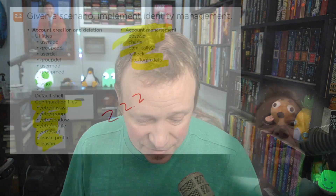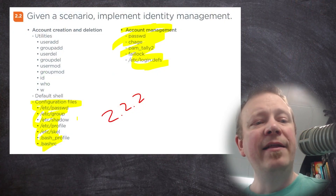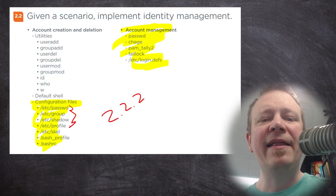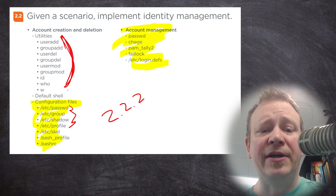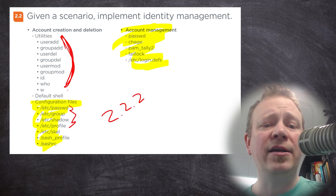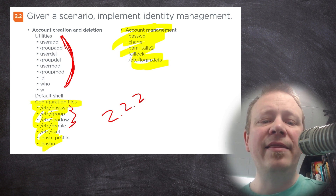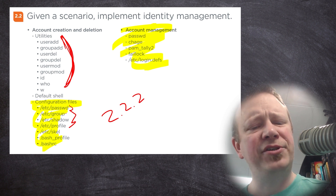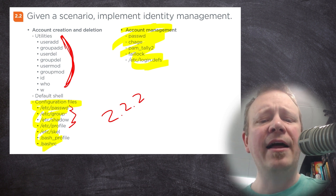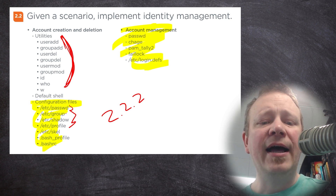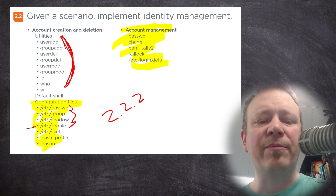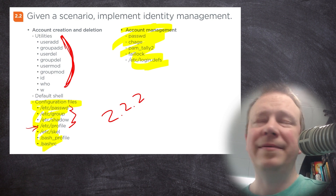Let's get right down to it. First, we're going to look at the files that these programs write to. When you use useradd, userdel, or usermod, the files /etc/passwd, /etc/group, /etc/shadow, and /etc/gshadow are where the password and group information goes. I'll explain it here and then we'll go to the command line.